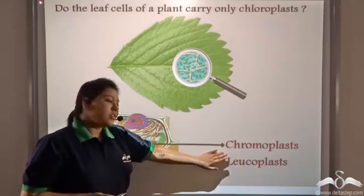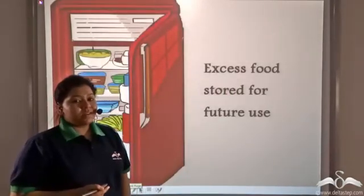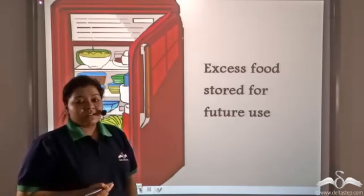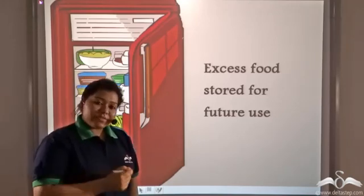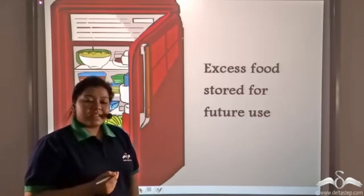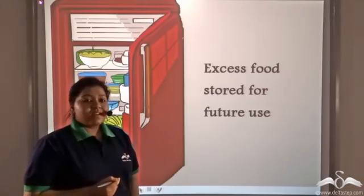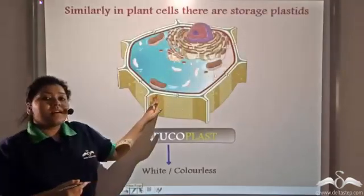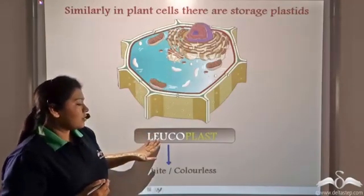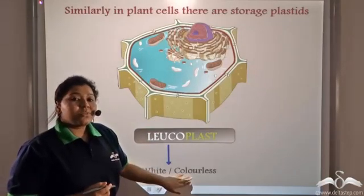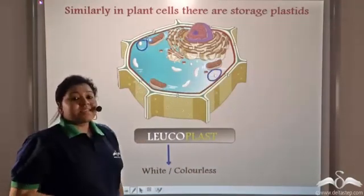Now let us study further about the leucoplasts. Your mother cooks food for you every morning. Now what if she cooks some extra one day? Will she throw away the extra food? No, she will store the excess food in the refrigerator for future use. Similarly, all plant cells manufacture food by the process of photosynthesis. The extra food that is present in the plant gets stored in organelles known as leucoplasts. Leuco means white or colourless, so leucoplasts are organelles present in plant cells that store this excess food.